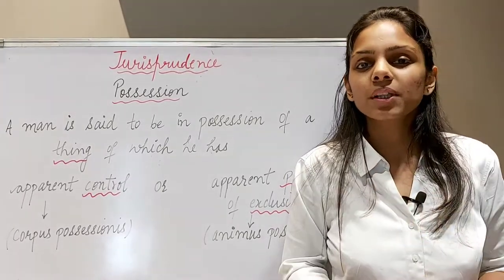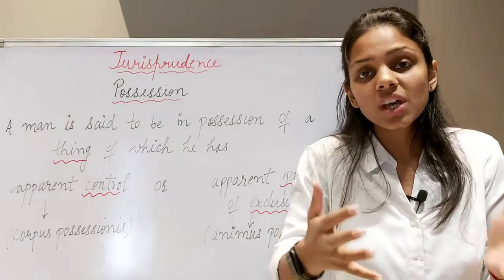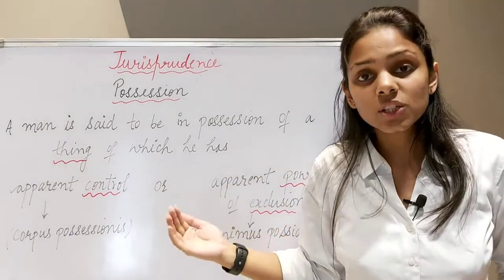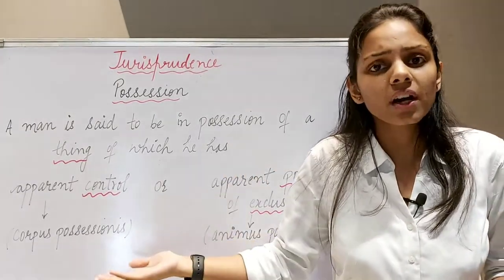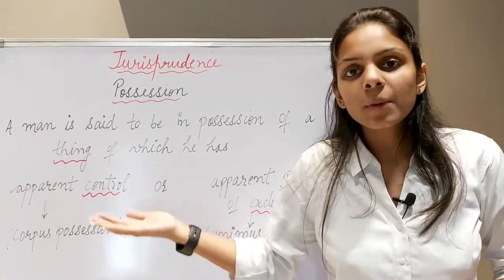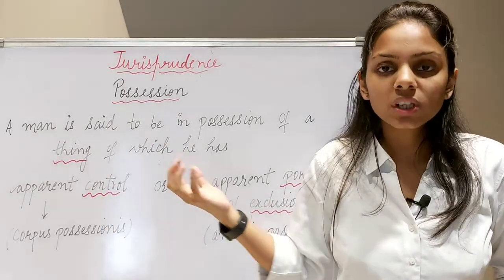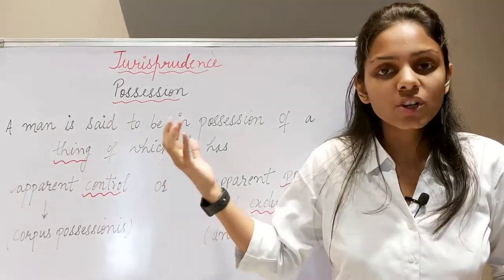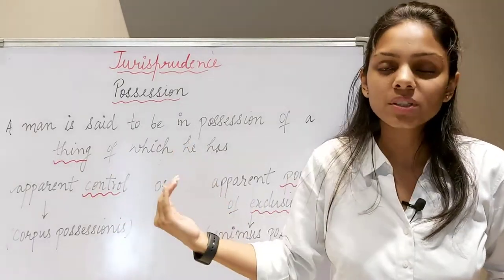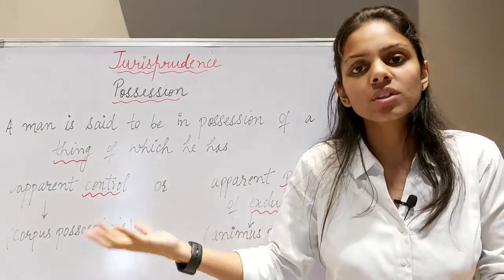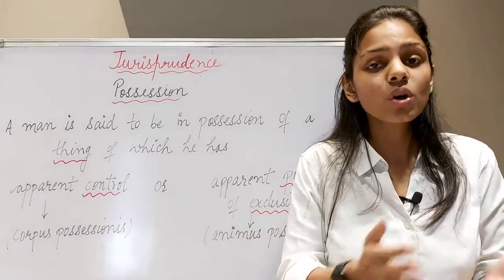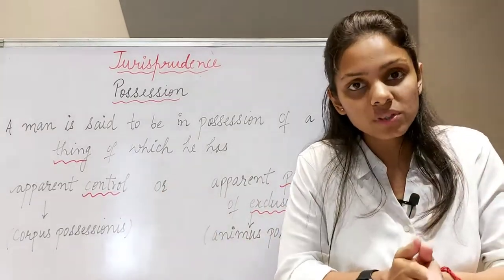Possession in fact ka matlab hota hai de facto possession, which is actual possession. Ab ye board mere paas hai — this is possession in fact. Possession in fact is very simple: jo aapke paas kisi bhi cheez ka actual control hota hai, actual possession hoti hai, dono cheezain hongi corpus aur animus, toh woh possession in fact hoga — which is actual physical control over a thing, which is called de facto possession.